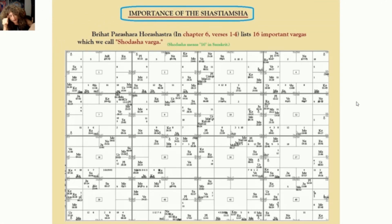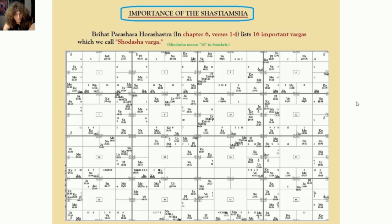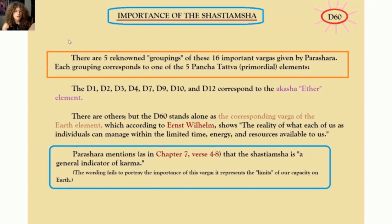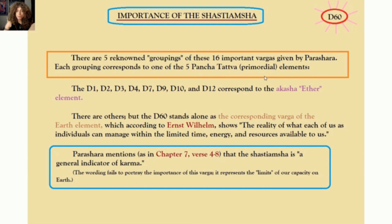The D60 Lagna doesn't have as much to do with today's discussion — you can get a lot done just by knowing the planets in the signs of the D60. These are the Shodasha Vargas, which you might recognize from Kala. Brihat Parashara Horashastra lists 16 important Vargas — Shodasha means 16 in Sanskrit. There are five groupings of the Vargas given by Parashara, each corresponding to one of the five Panchatatvas, the primordial elements — Pancha means five, Tattva means primordial elements, known from Ayurveda.